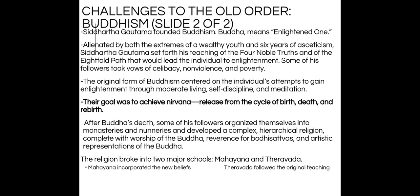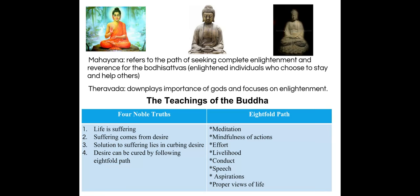After the Buddha's death, the religion began to change into two major schools: Mahayana and Theravada. Some followers organized themselves into monasteries and nunneries and developed a complex religion involving worship of the Buddha and reverence for the bodhisattvas — enlightened people who, instead of choosing nirvana, choose to remain on earth and help others achieve it. Mahayana incorporated these new beliefs. Theravada — the 'originata' as I like to call it — followed the original teachings of Buddhism. Over time, Buddhism evolved in new regions; for example, in Japan, Zen Buddhism focuses on the power of meditation.